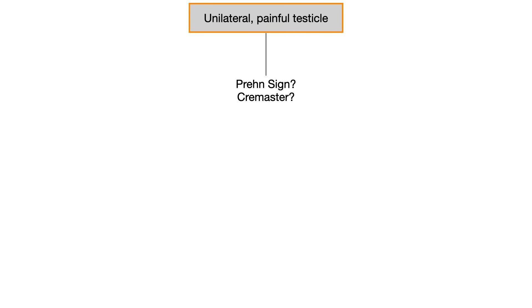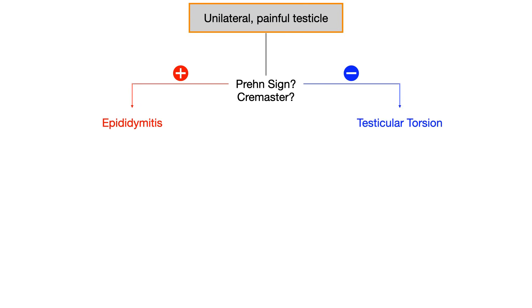If the Prehn's sign and the cremaster reflex are positive, we're dealing with epididymitis. If these items are negative, we're dealing with testicular torsion.